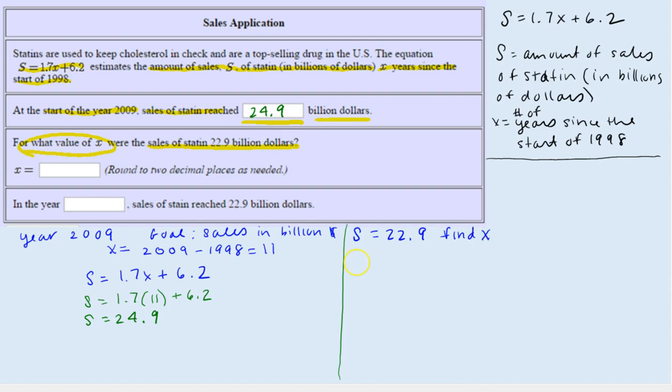So again, we'll write down our equation, S equals 1.7X plus 6.2. Now replace S with 22.9. So 22.9 equals 1.7X plus 6.2.